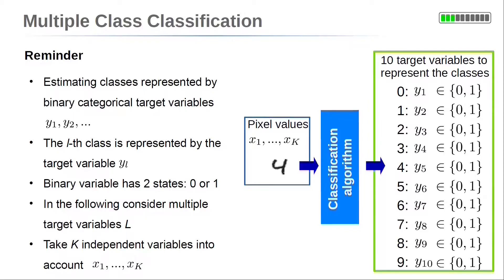Each class has a binary target variable. This is y_l for the lth class. It is 1 if the lth digit is present and 0 otherwise.